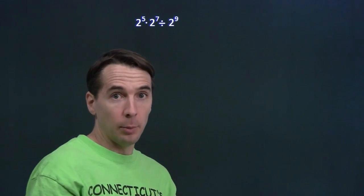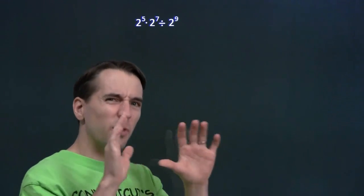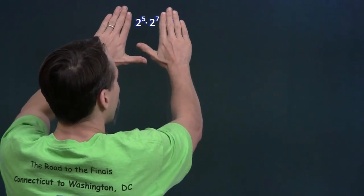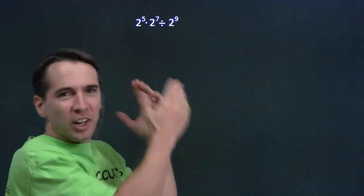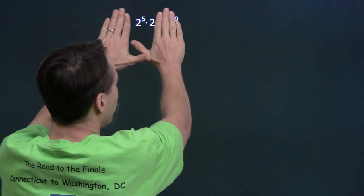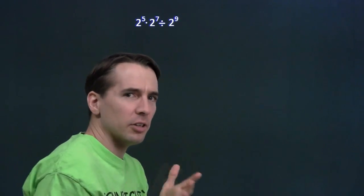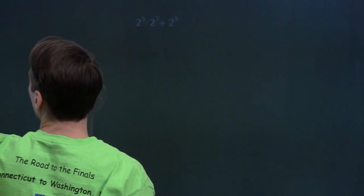Now this is a pretty complicated problem. What I like to do on complicated problems is focus on little pieces of the problem. I'm going to focus on this piece right here. So maybe if I can solve this little piece — two to the fifth times two to the seventh — that will make the problem easier.